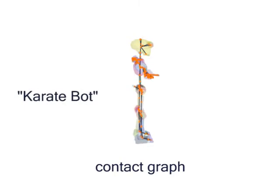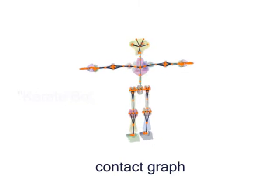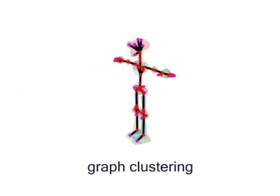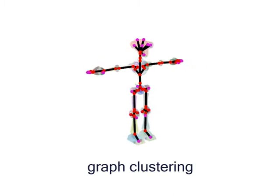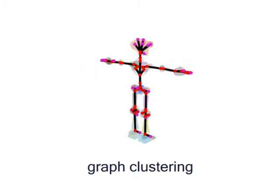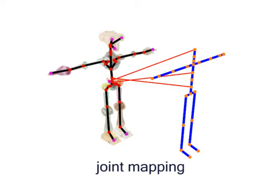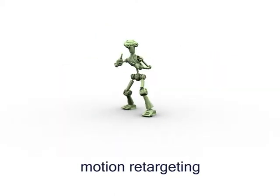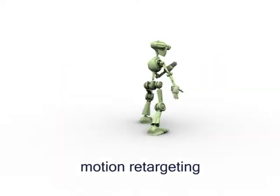In the following, we show some results for different input models. This is a relatively simple example, where the contact graph is not too complicated. As the model has the same number of limbs as the selected animation skeleton, we get a one-to-one mapping of the limbs.